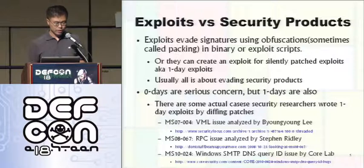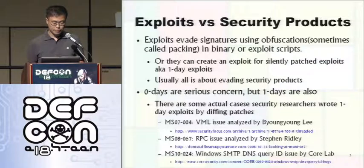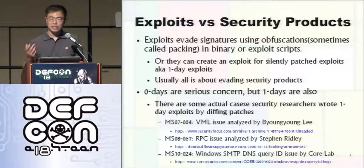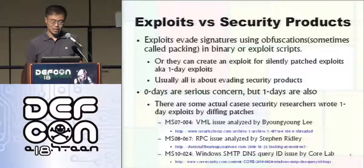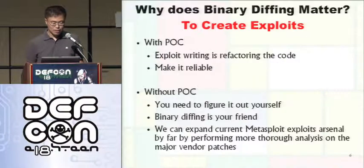The next one is very interesting: MS10-024. This is a kind of undisclosed vulnerability from Microsoft. They were releasing patches for other vulnerabilities and included some undisclosed vulnerability patches inside. It was actually caught by Core Security Lab — which is a little bit embarrassing. So you can know why binary diffing matters here.